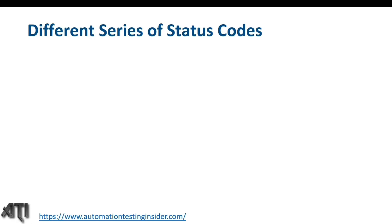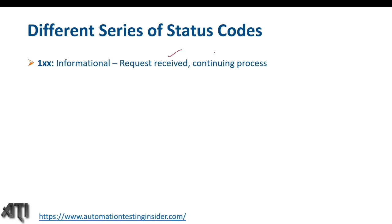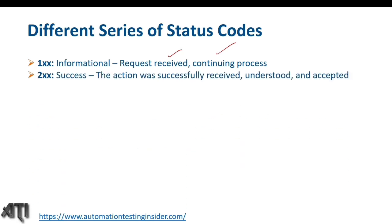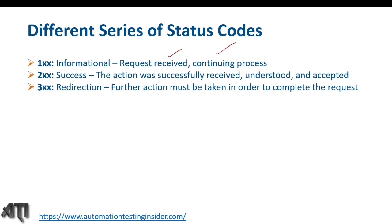Let's talk about the different categorizations. The 100 series is the informational series — the request has been received and the process is still continuing. The 200 series is the success series — the action was successfully received, understood, and accepted. The 300 series is redirection — further action must be taken in order to complete the request, meaning it has been redirected to some other URL.